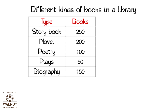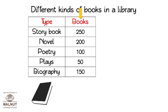Let us make a pictograph of the different kinds of books in a library. We have to make a pictograph of this data. We can choose a good symbol like a book to show the number of books. Look at the first entry — it is of story books and we can see 250 books. Having 250 book pictures is not a good idea; it's too many pictures and it's difficult to count too. So we can decide that one picture would represent more than one book.